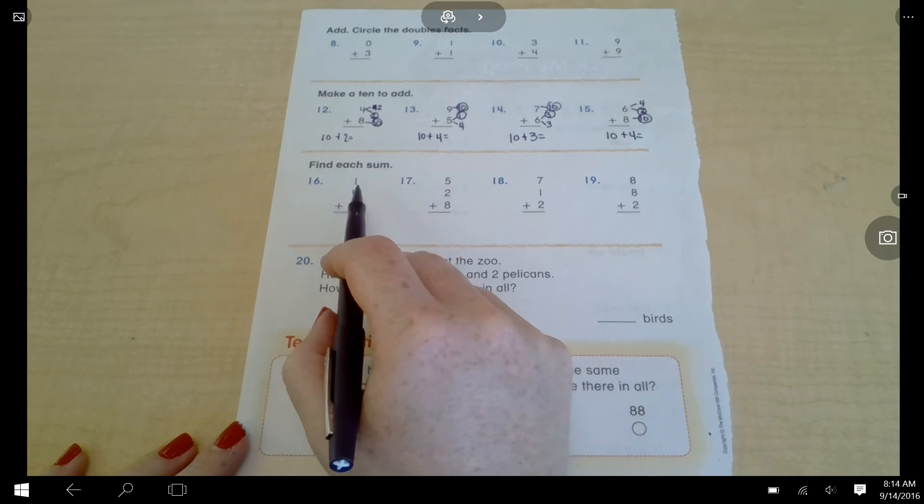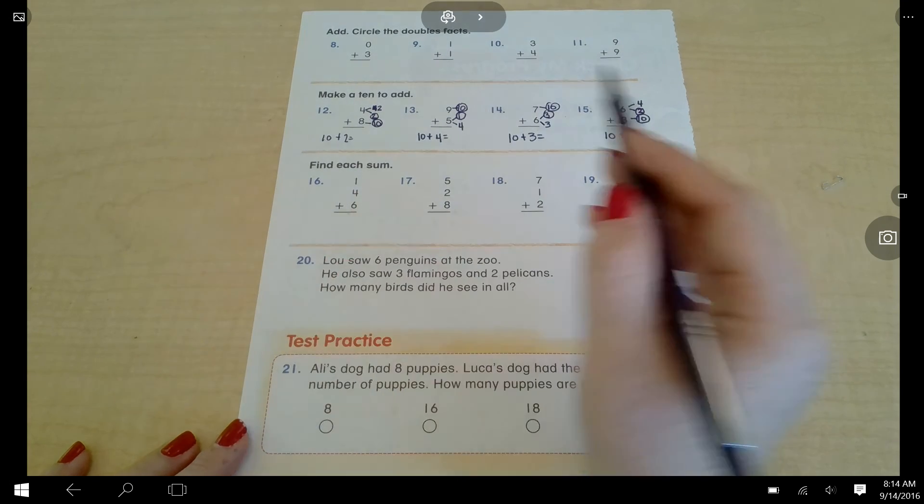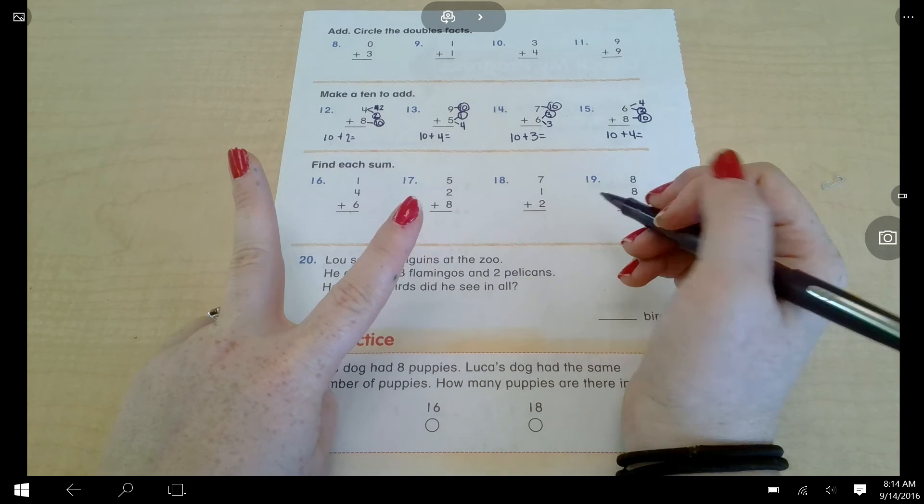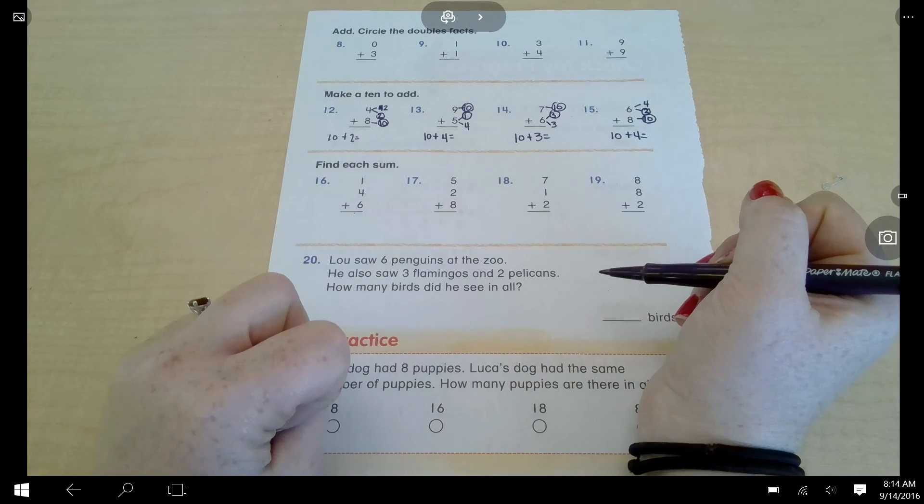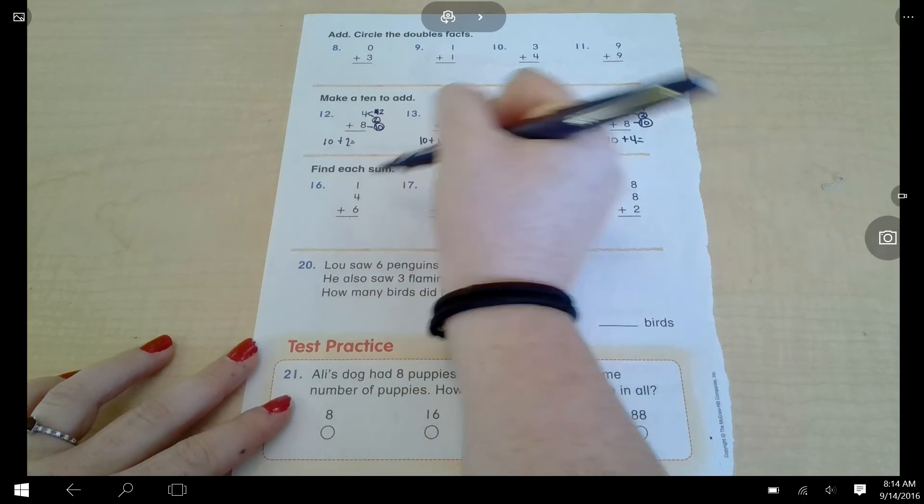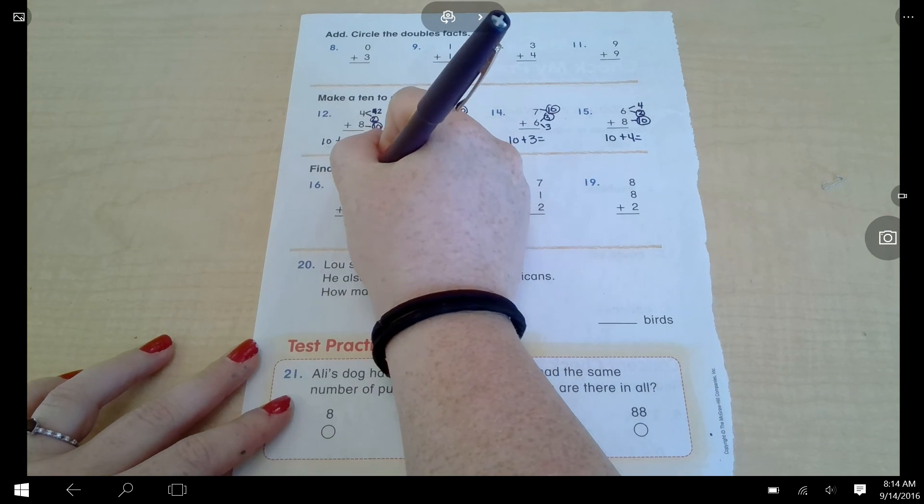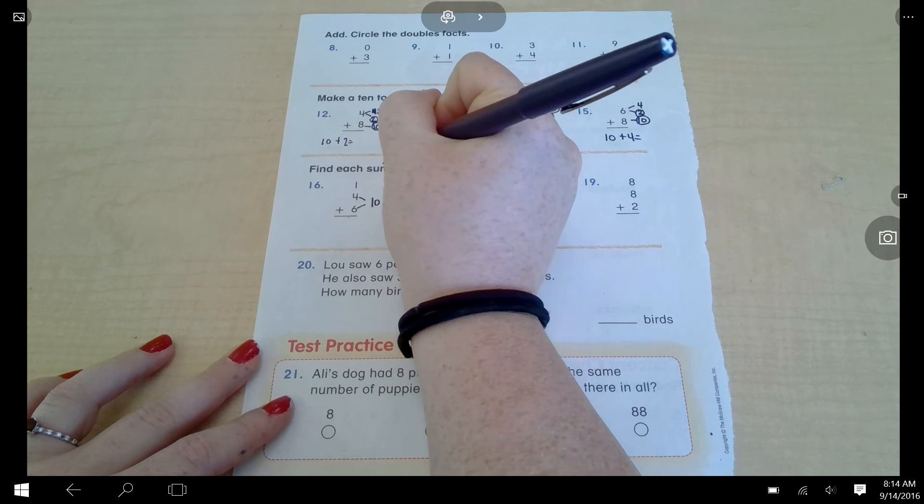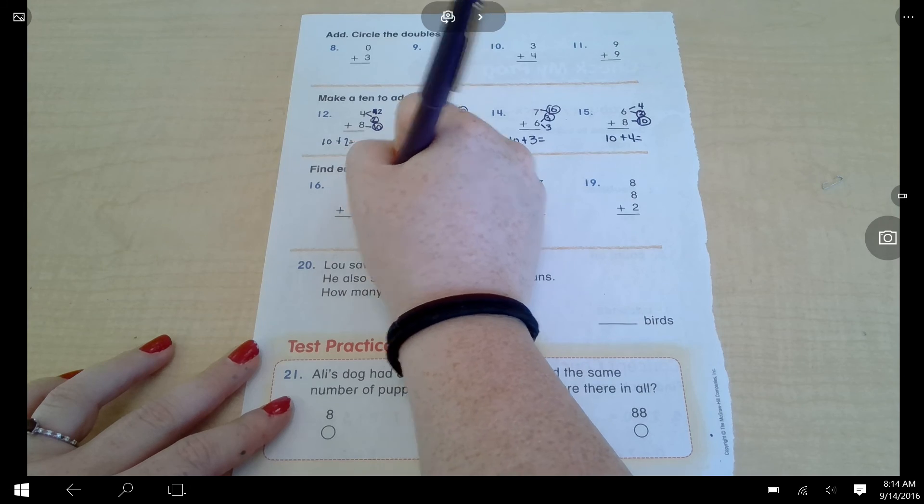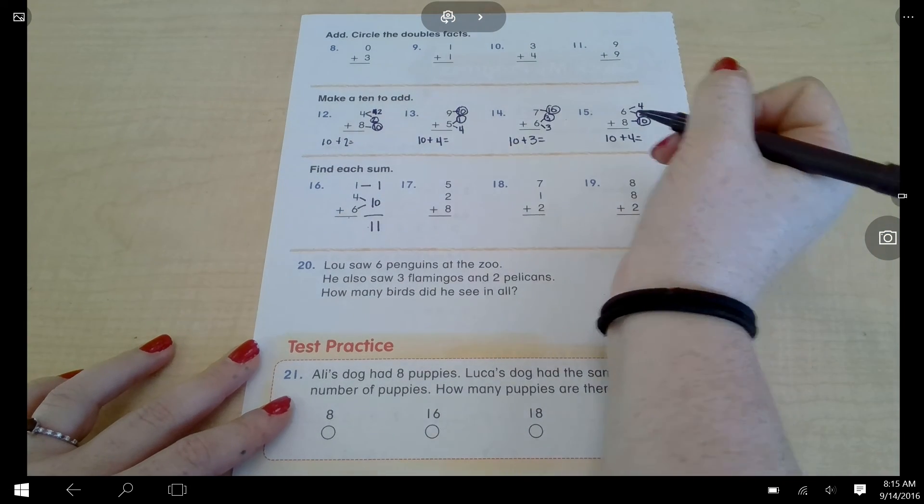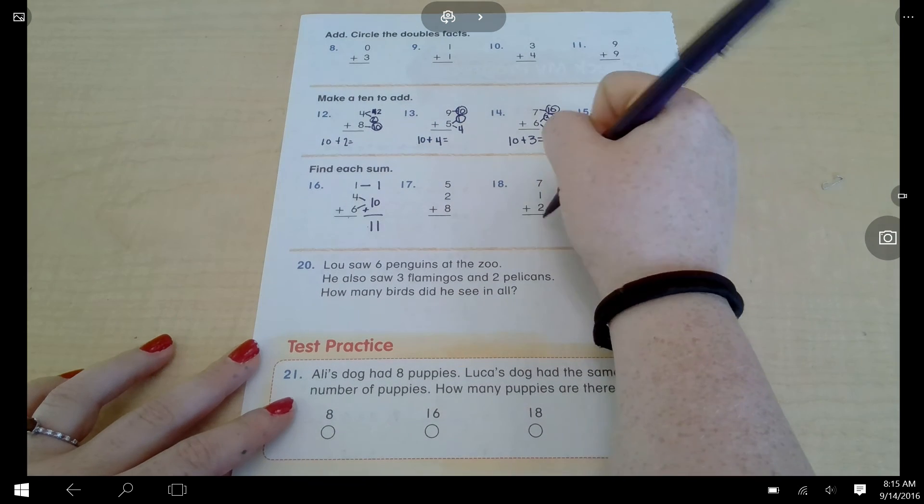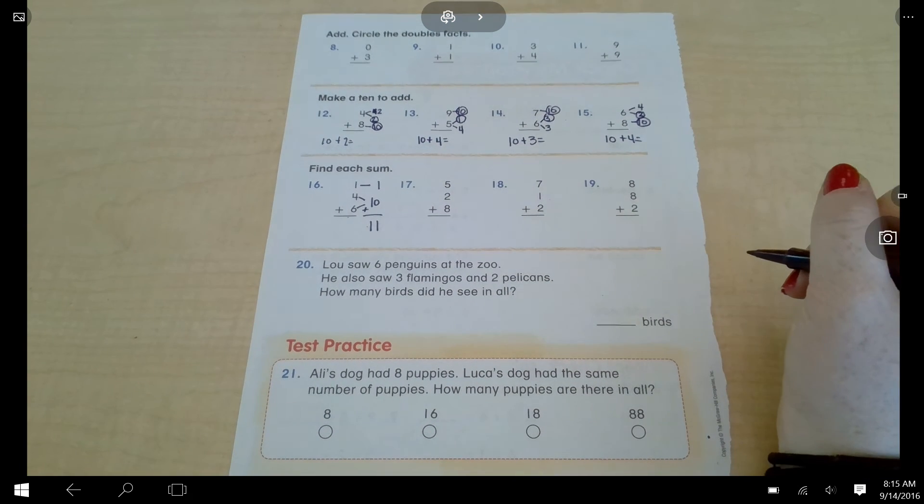The next row says find each sum. One plus four plus six. I want you to circle the two numbers you're adding together first and write their sum next to them like this. One plus four plus six. I know four and six are ten, so now I'm doing one plus ten equals eleven. You're going to do that for number seventeen, eighteen, and nineteen. Push pause, solve those problems now.